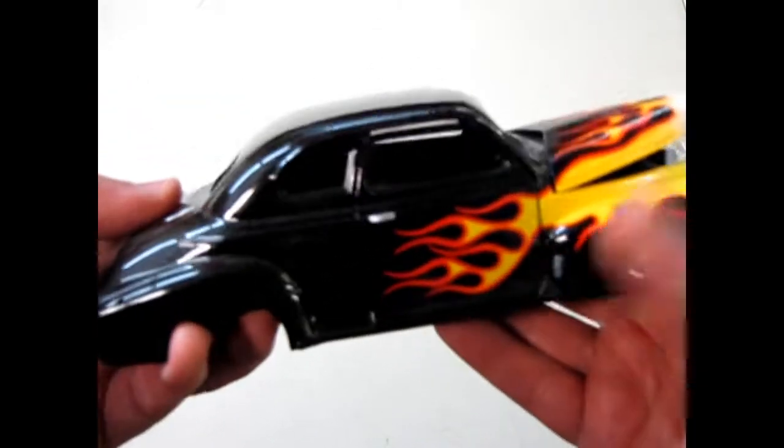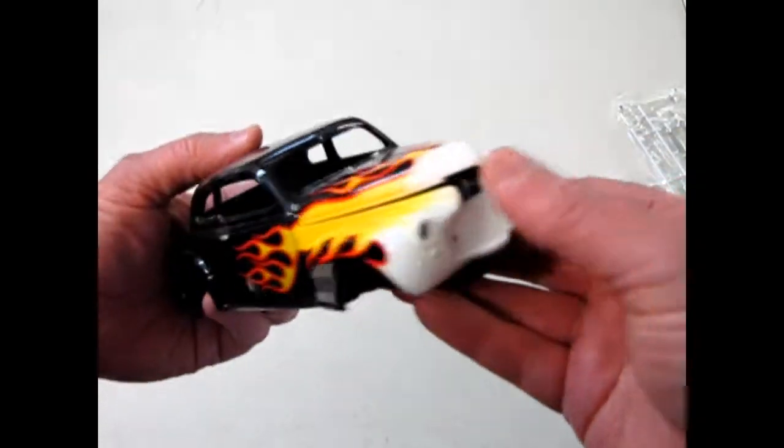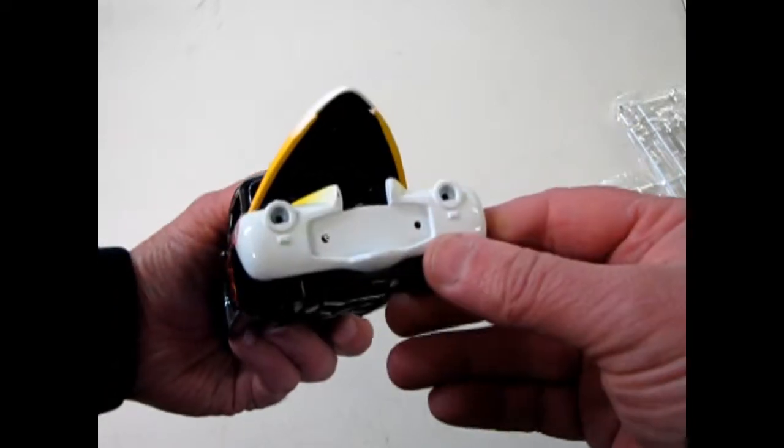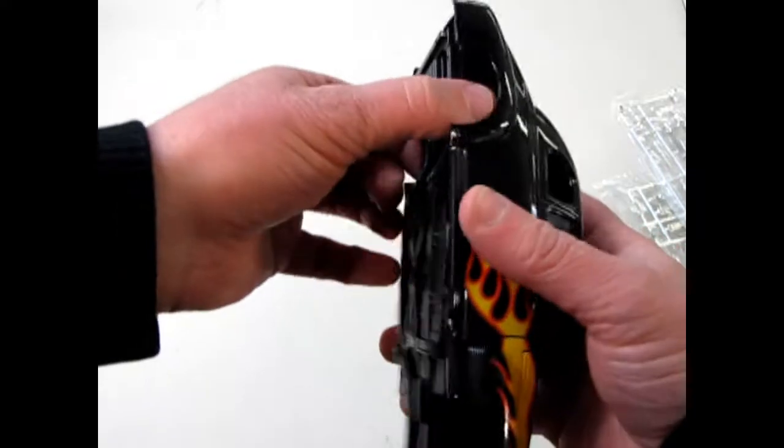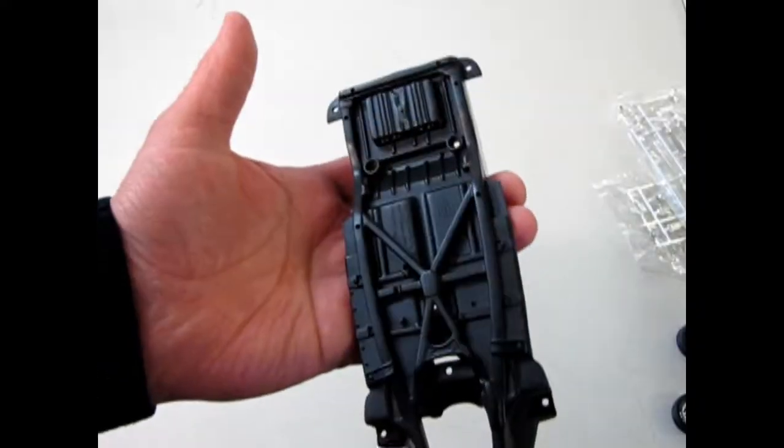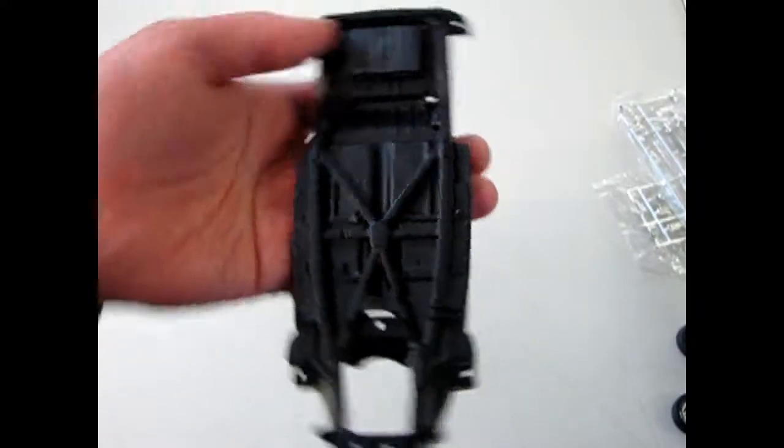And there is the metal die cast body. Hinged hood. And the undercarriage. See the nice detail on there.